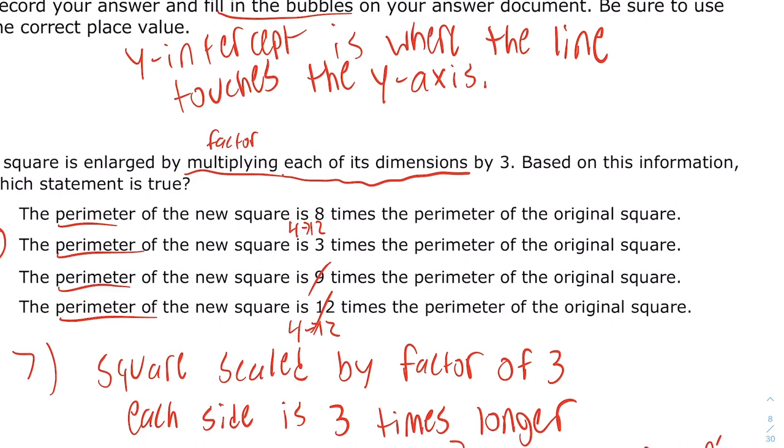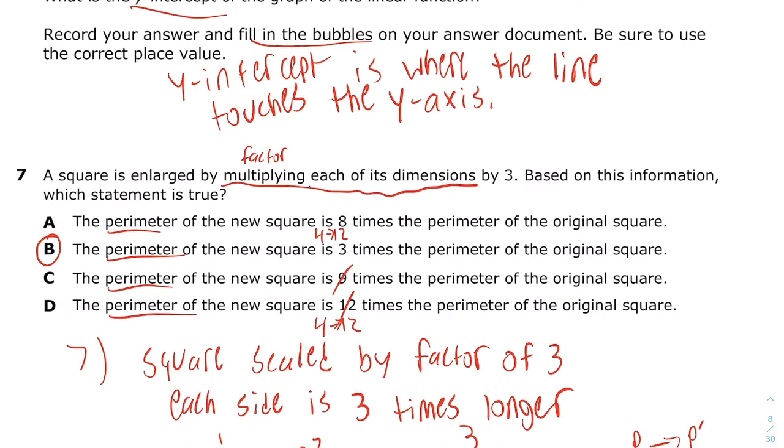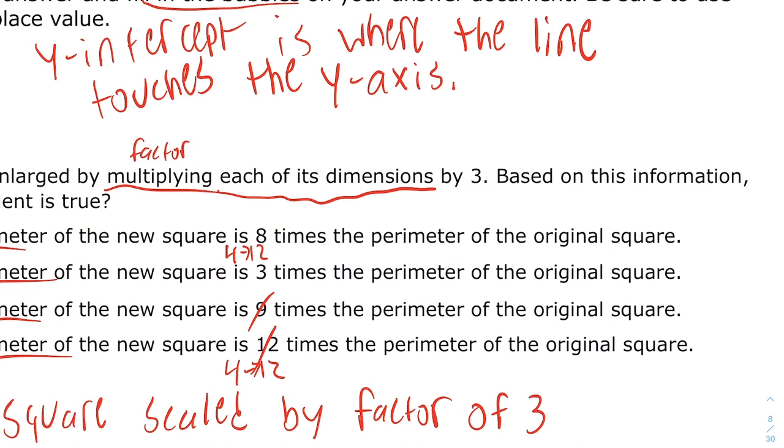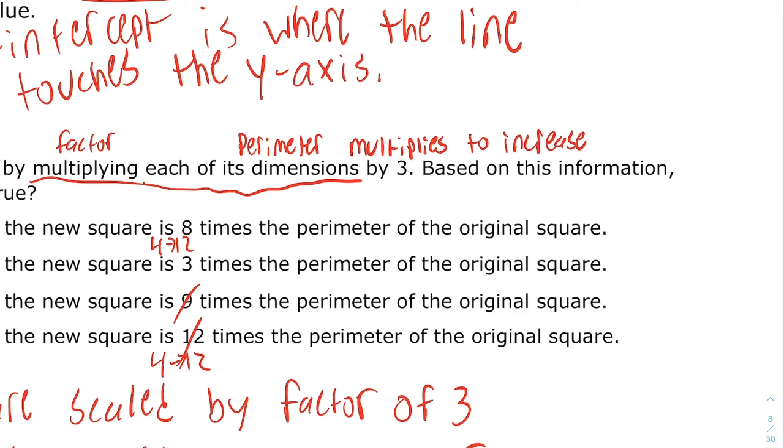The way that you remember that is whatever the scale factor is, the perimeter increases by that same amount. So your final hint: perimeter multiplies to increase by exactly the scale factor.